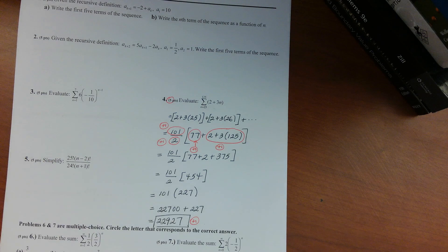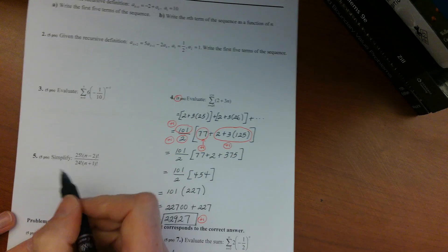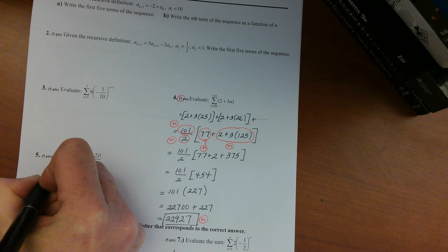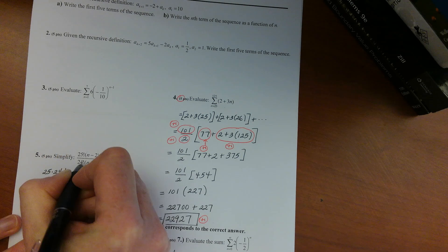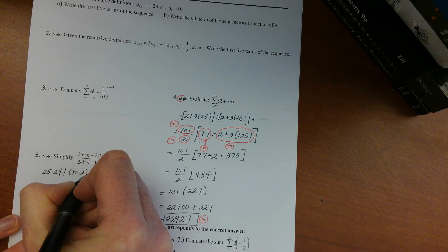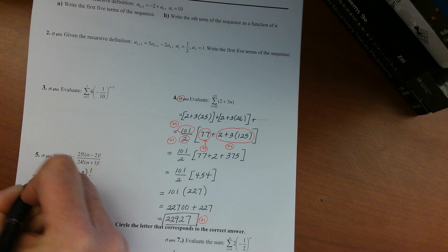So there's your five points. Okay, problem five, simplifying this. So let's expand 25 factorial as 25 times 24 factorial, since we've got 24 factorial on the bottom, and then n minus 2 factorial we'll just leave it that way on the bottom.